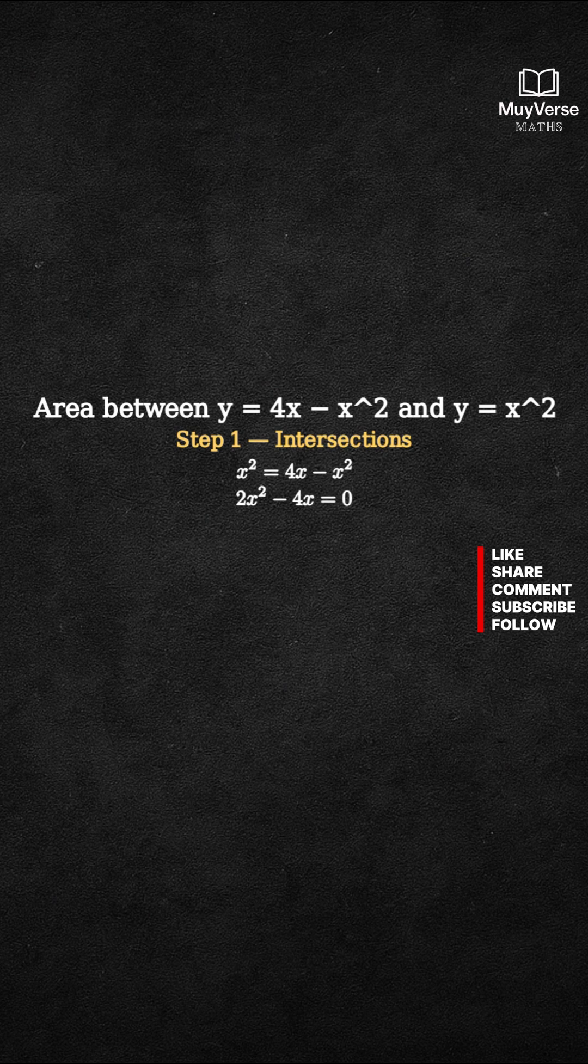Move everything to one side. 2x squared minus 4x equals 0. 2x times x minus 2 equals 0. So the solutions are x equals 0 and x equals 2.